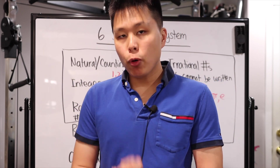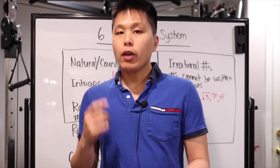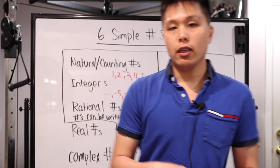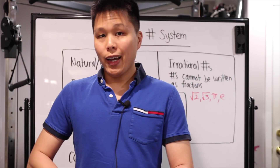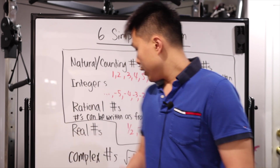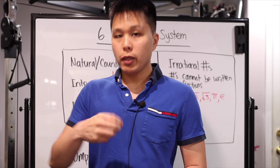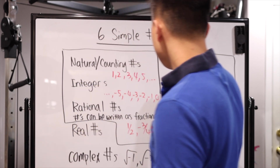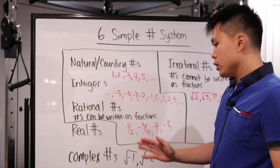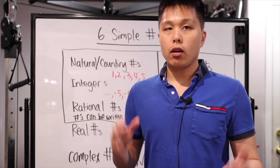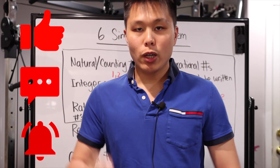So there you have it — these are the six simple number systems you'll most likely encounter in your studies of math. You have natural counting numbers: one, two, three, four, five, and so on. You have integers: all the negative numbers, zero, and all the positive counting numbers. Then rational numbers, which are any numbers that can be written as a fraction — the key is 'can be,' even if it's not currently in fraction form. Irrational numbers are those that cannot be written as a fraction. Then there's the all-encompassing real number group, and the opposite of that is complex numbers — most likely you'll encounter complex numbers as square roots of negative numbers. Hopefully this clarifies things. If you haven't already, please like, comment, and subscribe. I'll see you in the next video.